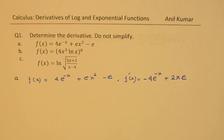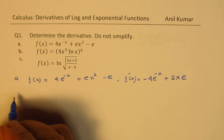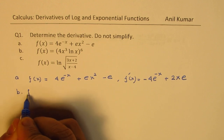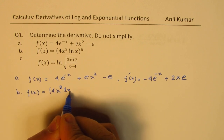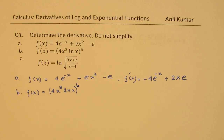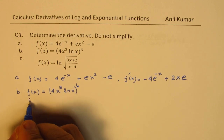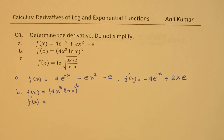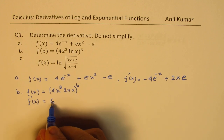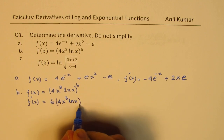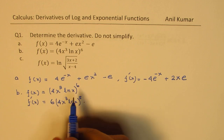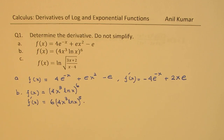Now let's look into part b: the function given to us is f(x) equal to 4x cubed times ln x, all to the power of 6. To find the derivative of this function we will have to use a combination of the power rule and chain rule. So we get 6 times (4x cubed ln x) to the power of 5, times the derivative of the inside function. Now the inside function derivative requires the product rule.